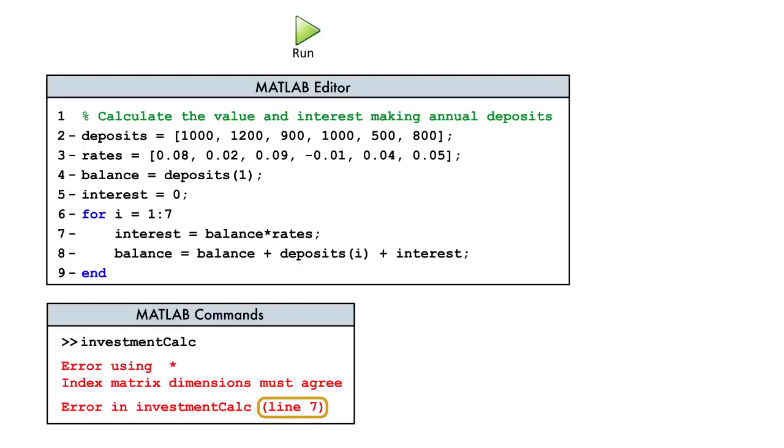There was a problem in line 7 of the code related to multiplication. Finding errors is often easier by pausing the code near the error location. We do this using a breakpoint. With the code file open in the MATLAB editor, let's create a breakpoint by left clicking on line 7.